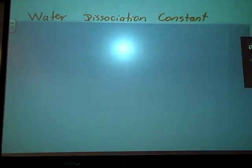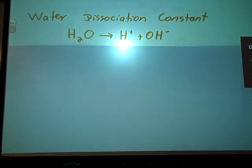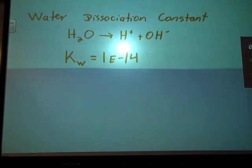Alright, last bit for this video. Water also has a dissociation constant. So water also has an equilibrium going back and forth between the put together H2O form and that hydrogen and hydroxide ion. There is a back and forth. It's called Kw. And Kw has a set value. Like I said, these are standardized. And Kw is 1 times 10 to the negative 14th.